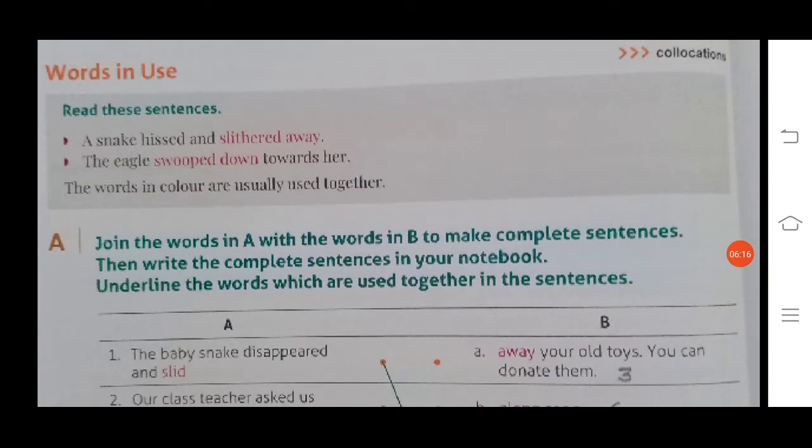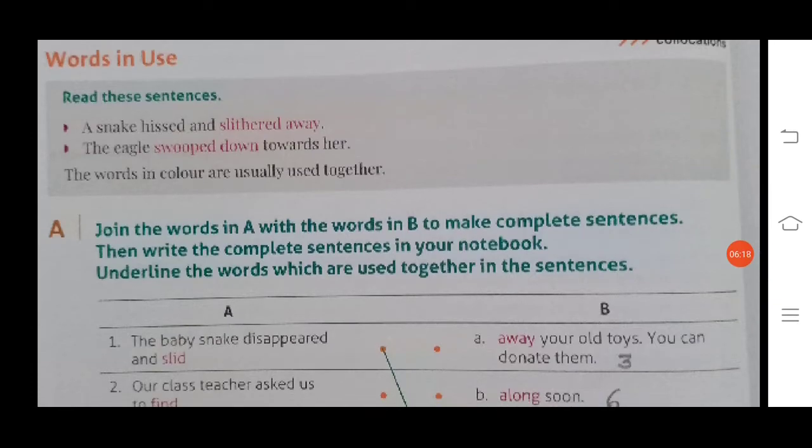Now we'll move on with words in use. Read these sentences: a snake hissed and slithered away, the eagle swooped down towards her. These words in color—slithered away and swooped down—are usually used together.